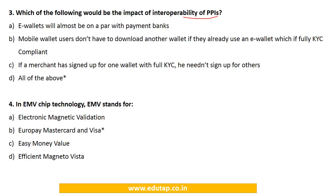Question 2: Which types of PPIs permit cash withdrawal? (A) Closed system, (B) Semi-closed system, (C) Open system, or (D) All of the above. As discussed, only open system PPIs permit cash withdrawal, so the answer is option C. Question 3: What would be the impact of interoperability of PPIs? The answer is option D — all of the above — since all three stated impacts are correct.